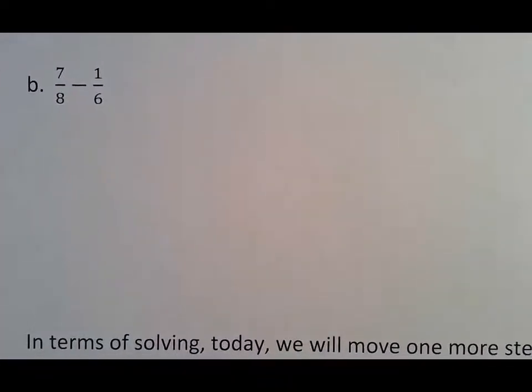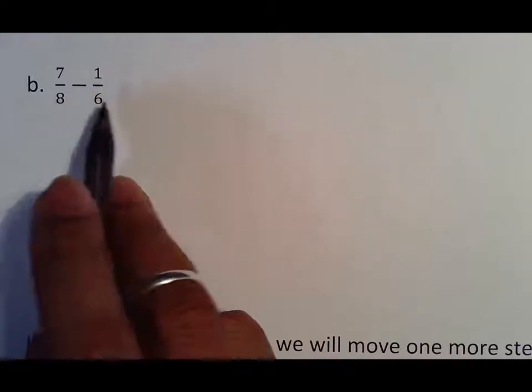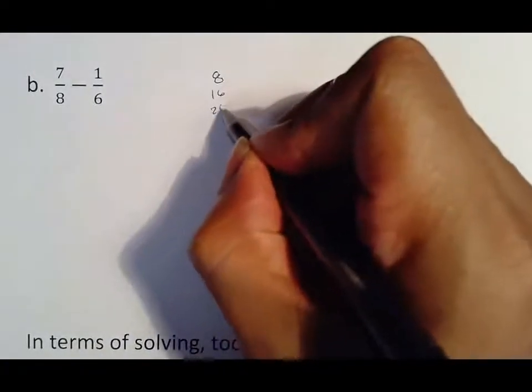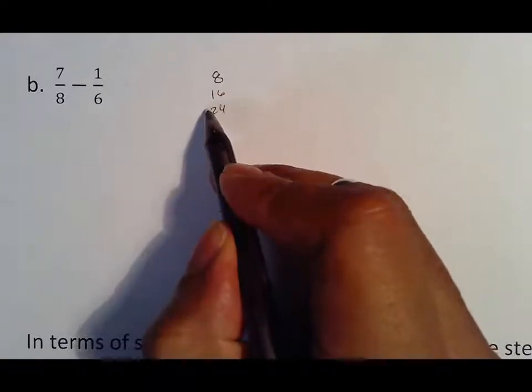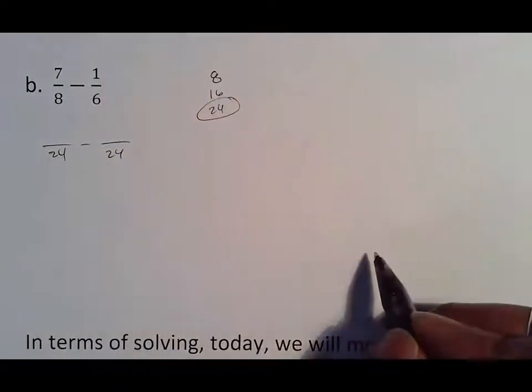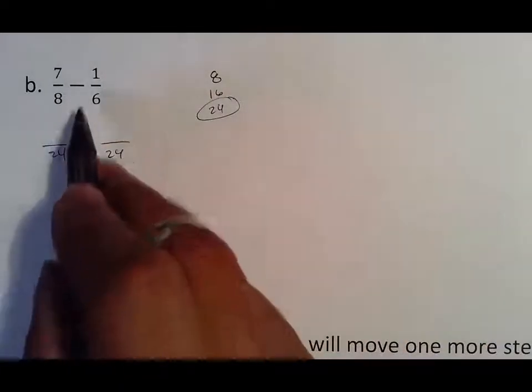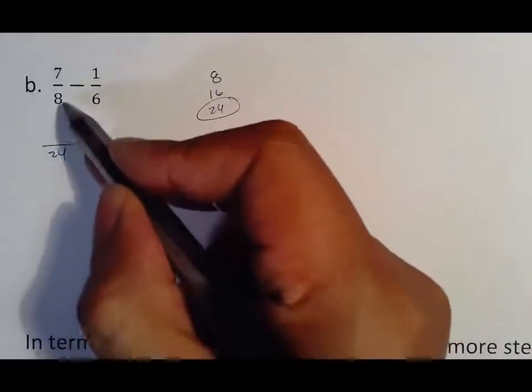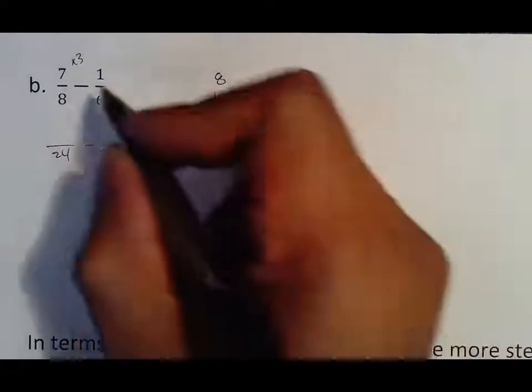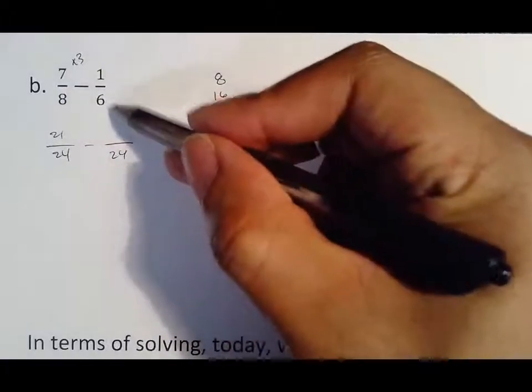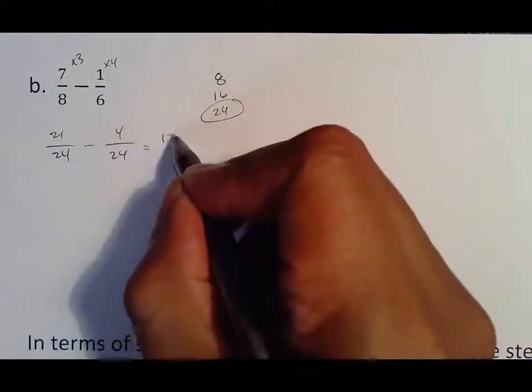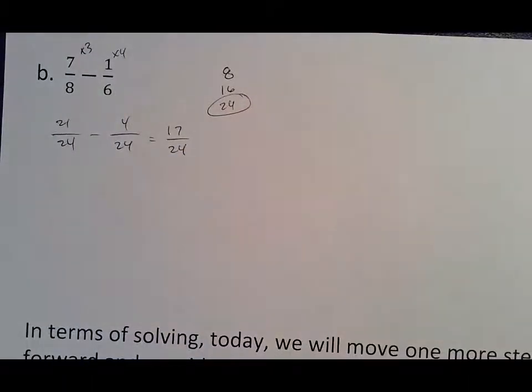Same thing here, but eight and six. Even number and even number typically means that they probably will meet earlier than 48, which is what eight times six is. So eight, 16, 24. Oh, in my brain, I remember 24 does go with six, which means that 24 is a number. What I usually do whenever I actually work with fractions is I just rewrite both of those denominators down there and copy whatever signs there. I know eight times three makes 24, which means that makes 21. I know that six times four makes 24, which makes that four. 21 minus four is 17 over 24.